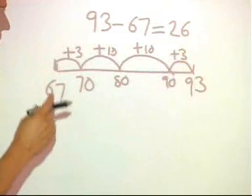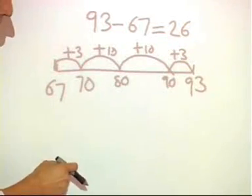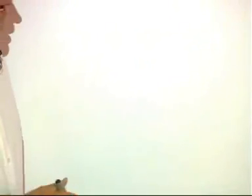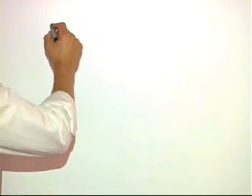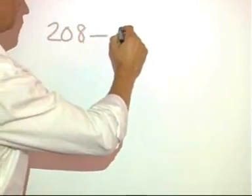Eventually, children become more efficient in the use of this method, and it can also become a useful mental method as well. If we take a slightly more complicated question, for example, 208 minus 59.